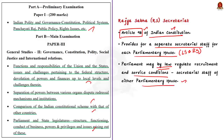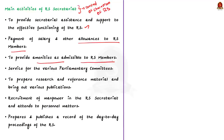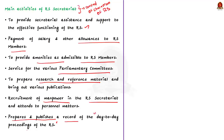The Rajya Sabha Secretariat functions under the overall guidance and control of the Chairman of Rajya Sabha, who is the Vice President of India. Its main activities include: providing secretarial assistance and support to the effective functioning of Rajya Sabha; payment of salary and allowances to Rajya Sabha members; providing amenities to members; providing service for various parliamentary committees; preparing research and reference material and publications; recruitment of manpower; attending to personal matters; and preparing and publishing a record of day-to-day proceedings of Rajya Sabha.